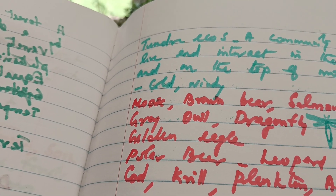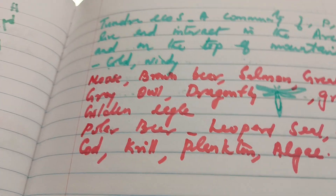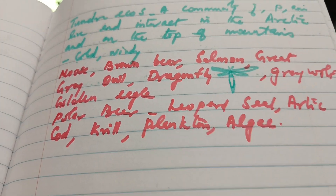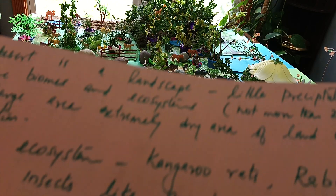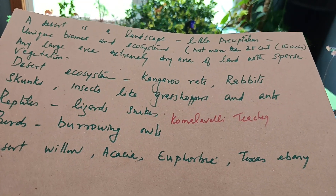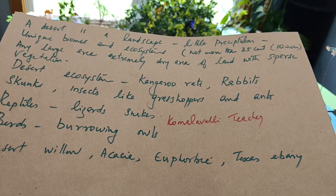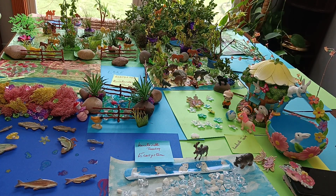Plankton is also found — plankton is the food of fish. These are the plants and animals that we can see in the desert. In the tundra region, you can see the polar bear and other animals.